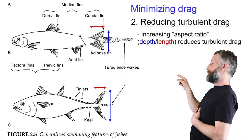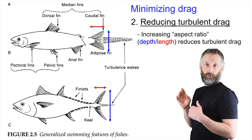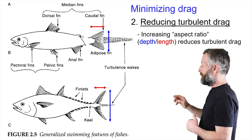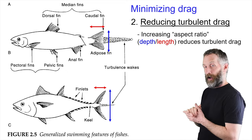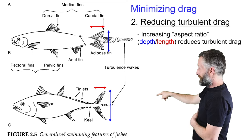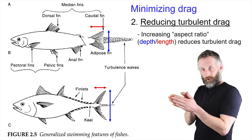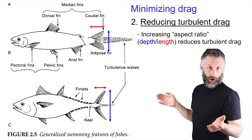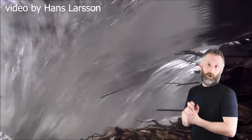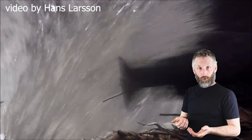One way to reduce turbulent drag is by increasing the aspect ratio — the depth-to-length ratio of the caudal or propulsive fin. The salmony-type fish on the top right does not have a very high aspect ratio, but the tuna on the bottom does. A tall fin that isn't very deep generates relatively little turbulence, making it a very efficient shape, whereas the salmon generates a lot of turbulence with its big paddle-like tail. A low aspect ratio tail has a much larger surface area for generating thrust, so it can produce quick bursts — it's just not very efficient.